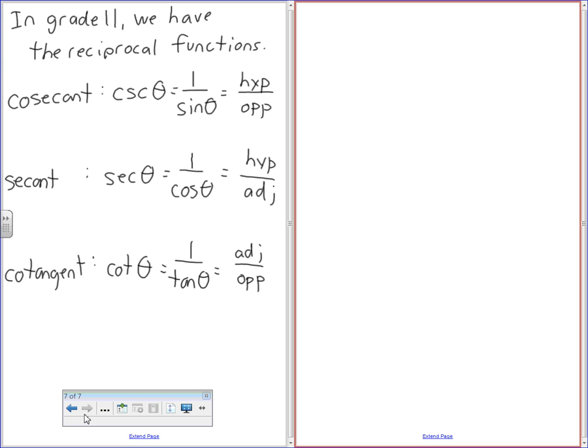Because history doesn't let it happen. Secant is then, so cosecant is 1 over sine, secant is 1 over cos, cotangent is 1 over tan, which sort of makes sense.